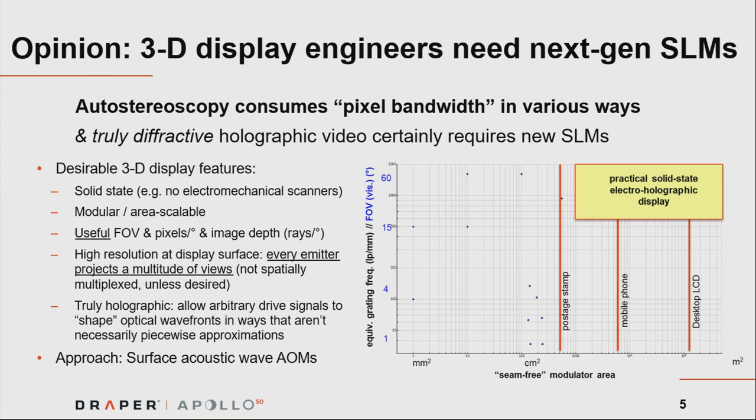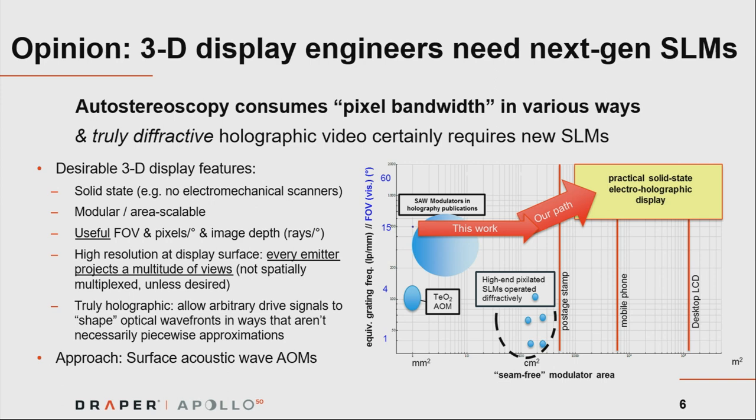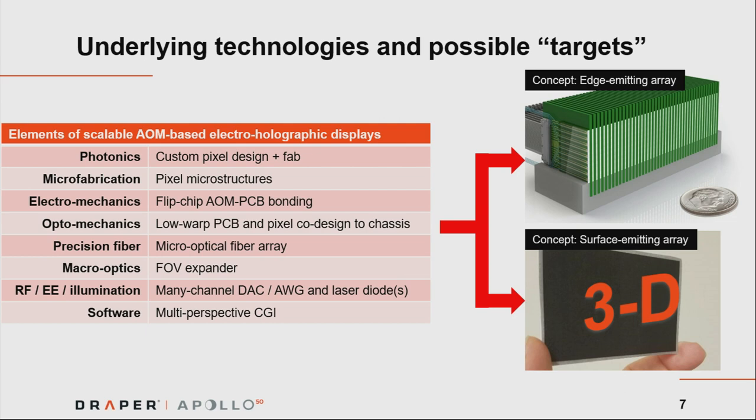We surveyed commercially available spatial light modulators and plotted them in terms of their seam-free modulator area — how large you could make them without the user seeing frames — against the equivalent grating frequency needed to give a certain field of view. The axes are logarithmic, from millimeters squared to meters squared. Most are excellent technologies but are either too small or don't have a wide enough viewing angle. This work reports on our efforts to extend academically inspired work and increase it in terms of area and field of view.